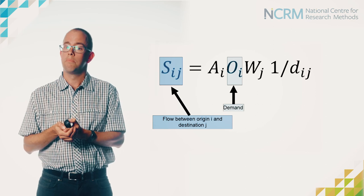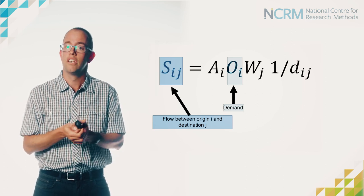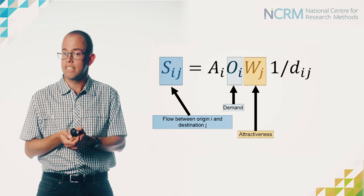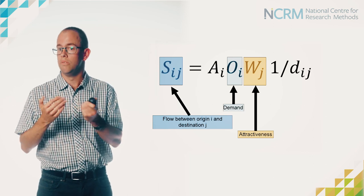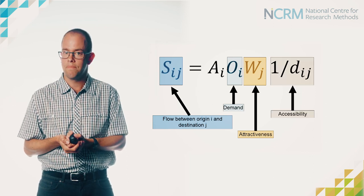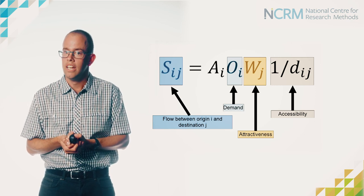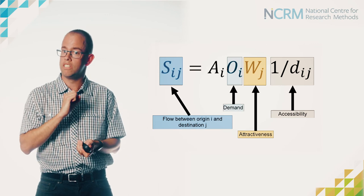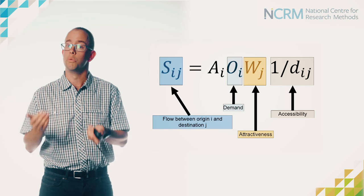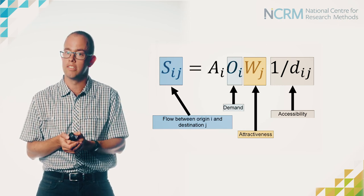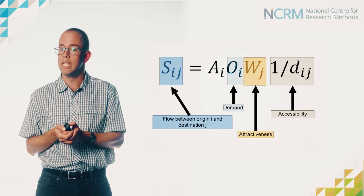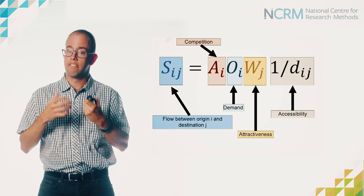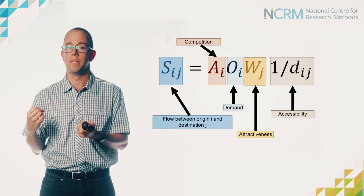That flow is proportional to everything on the right-hand side of this equation. Firstly, it's driven by the amount of demand available in that origin zone — we refer to that as Oi, the demand in demand zone i. It's also driven by some notion of attractiveness at the destination, which we denote Wj, the attractiveness of destination j. It's also driven by the accessibility of that destination, and as we can see in the equation, it's inversely proportional to the distance dij between origin zone i and destination j. The flows will diminish with distance because people want to shop close to home. And the hardest one for many to understand is our Ai term — in a retail model like this, we call that our competition factor, reflecting that consumers are making this decision across a whole range of competing destinations.